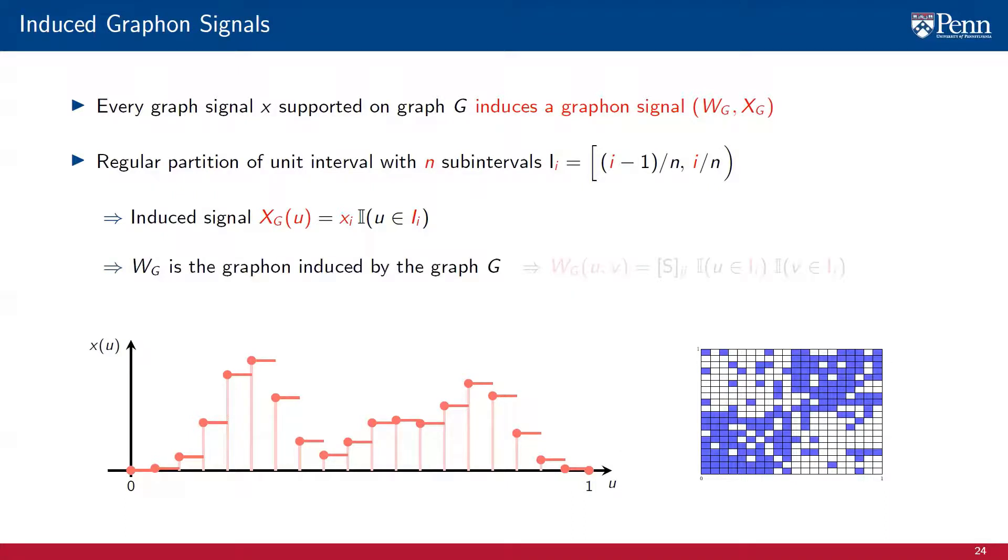The graphon components of the induced graphon signal are the graphons induced by the graph G, which we have already defined. For completeness, we recall that this induced graphon W_G assigns the value S_{ij} when the argument u belongs to the partition I_i and the argument v belongs to the partition I_j.